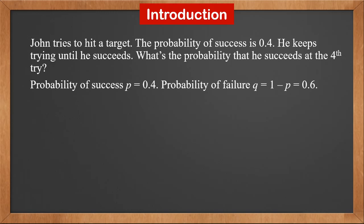If John succeeds at the 4th try, the first 3 times are all failures. Therefore, p4 is the cube of q times p. This is 0.6 cubed times 0.4, which is 0.0864.